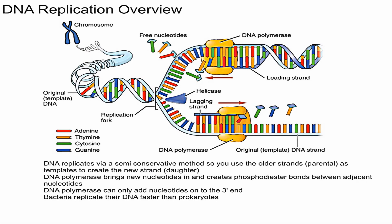DNA polymerase is able to do this because we know which nitrogenous bases pair up with which. For example, this orange base over here is thymine, and thymine is going to pair up with adenine, shown in red, which is being brought in.